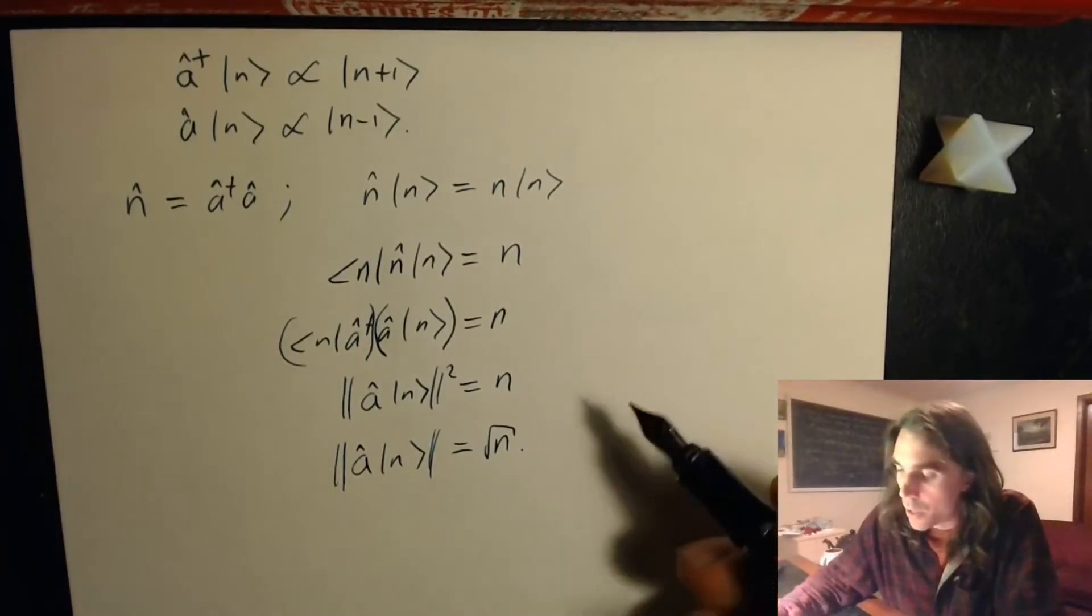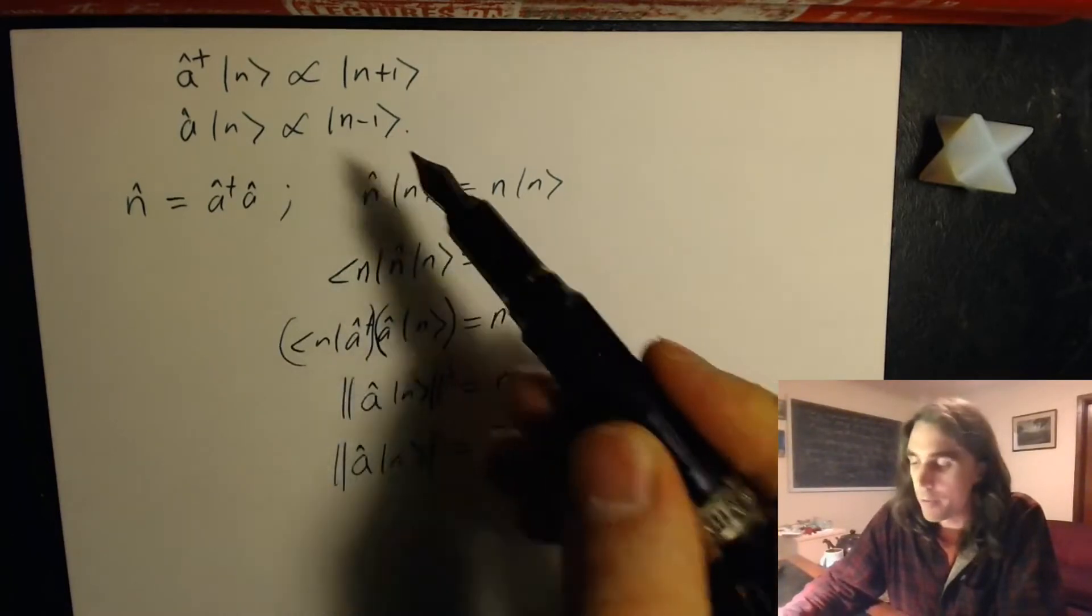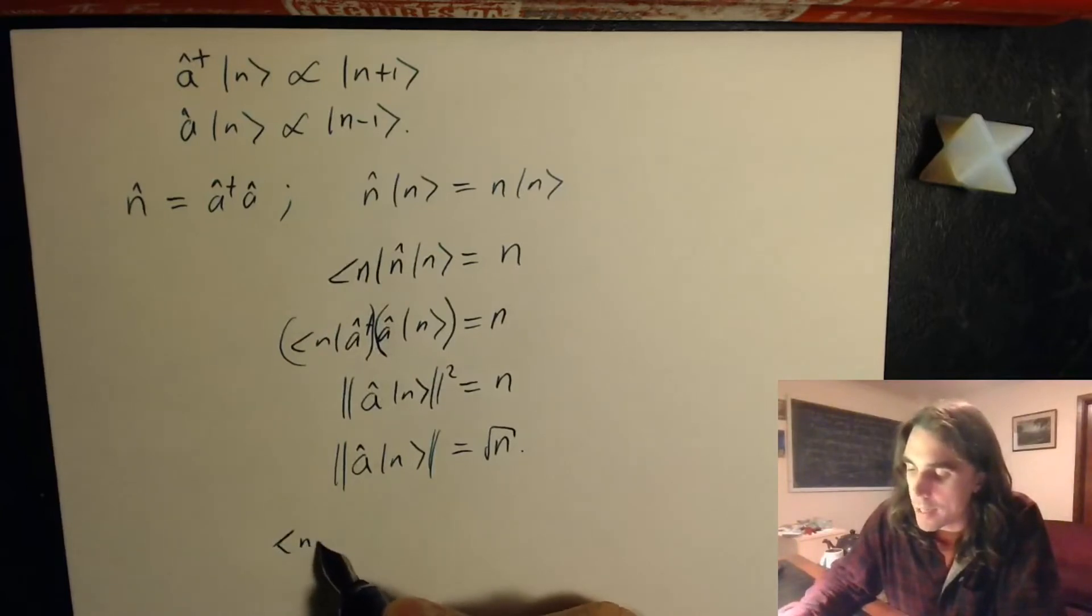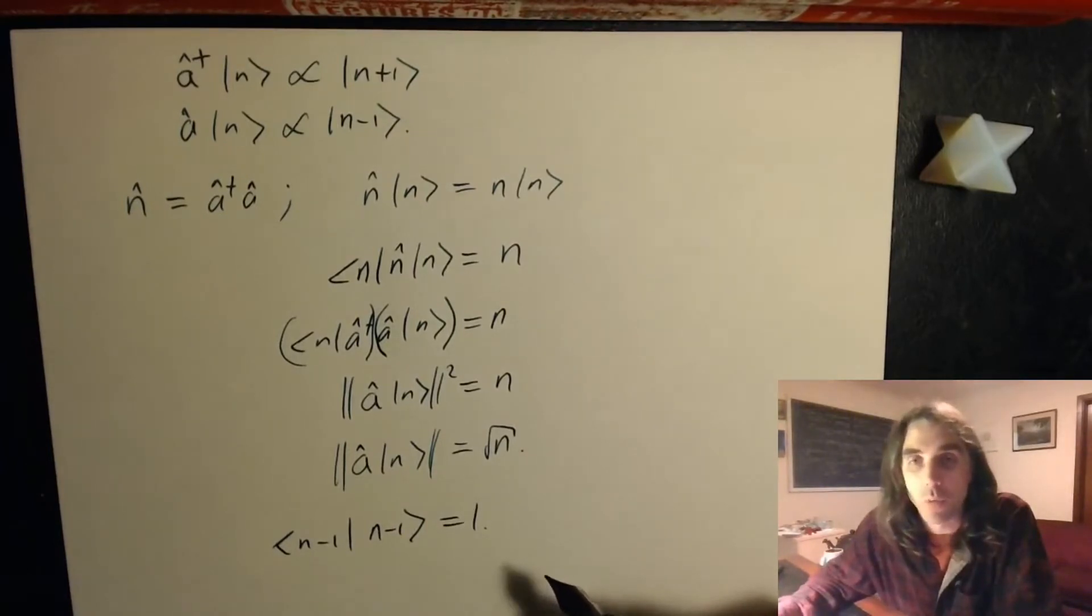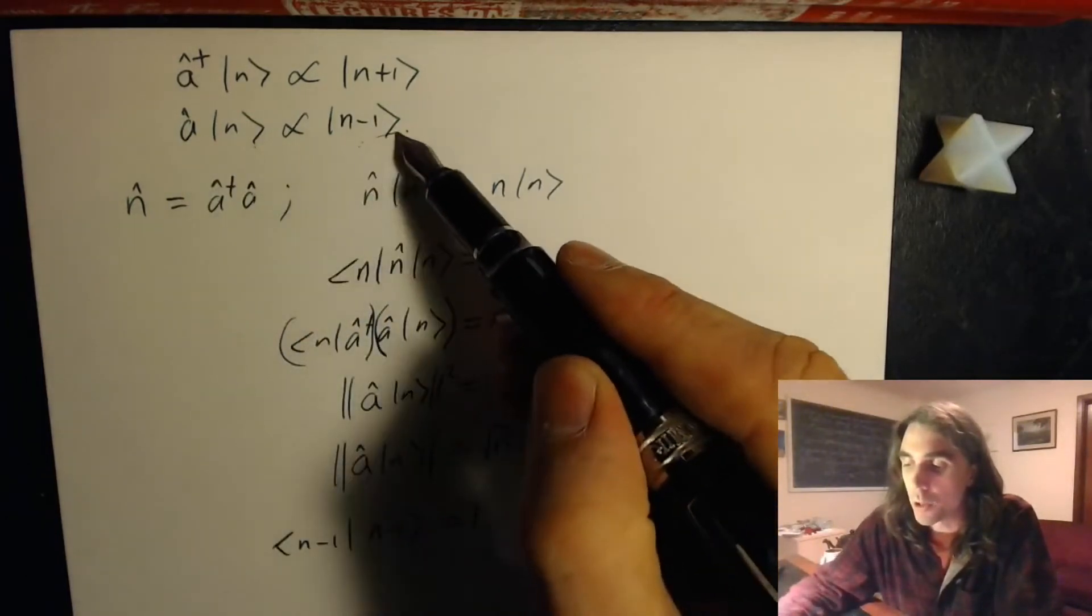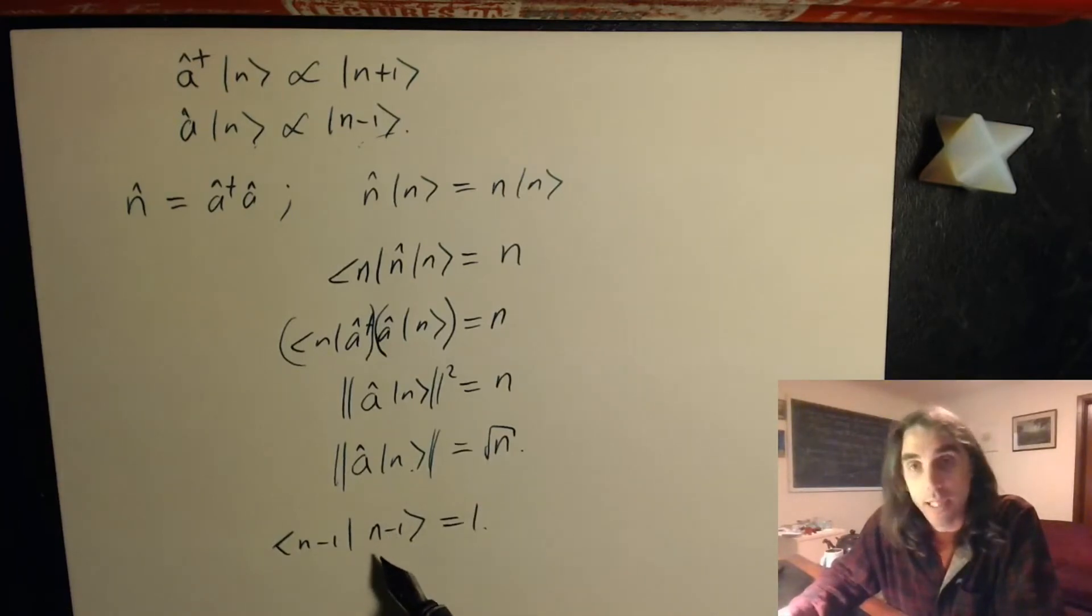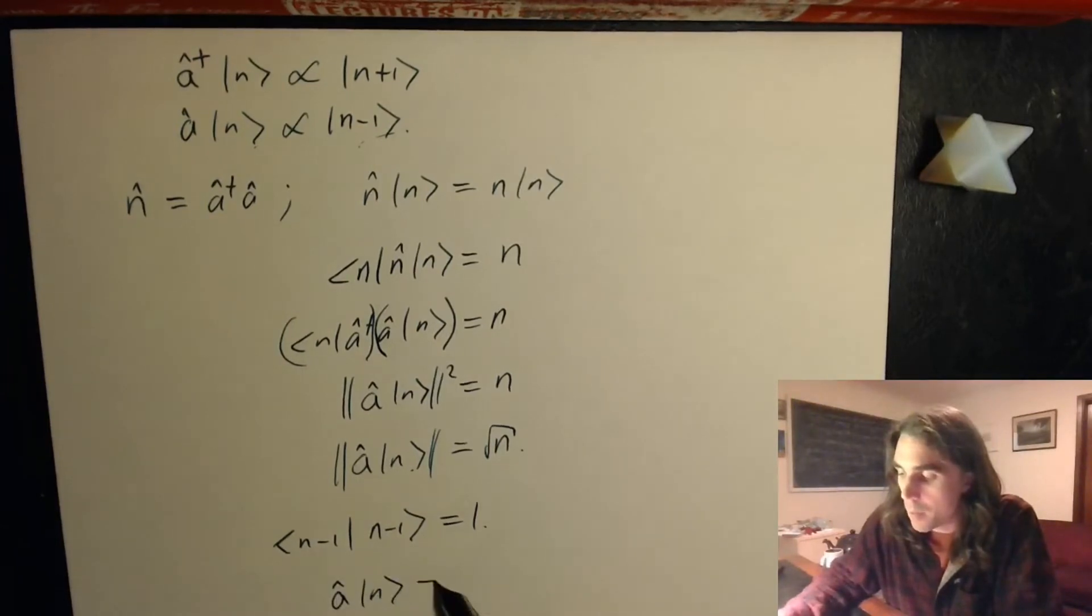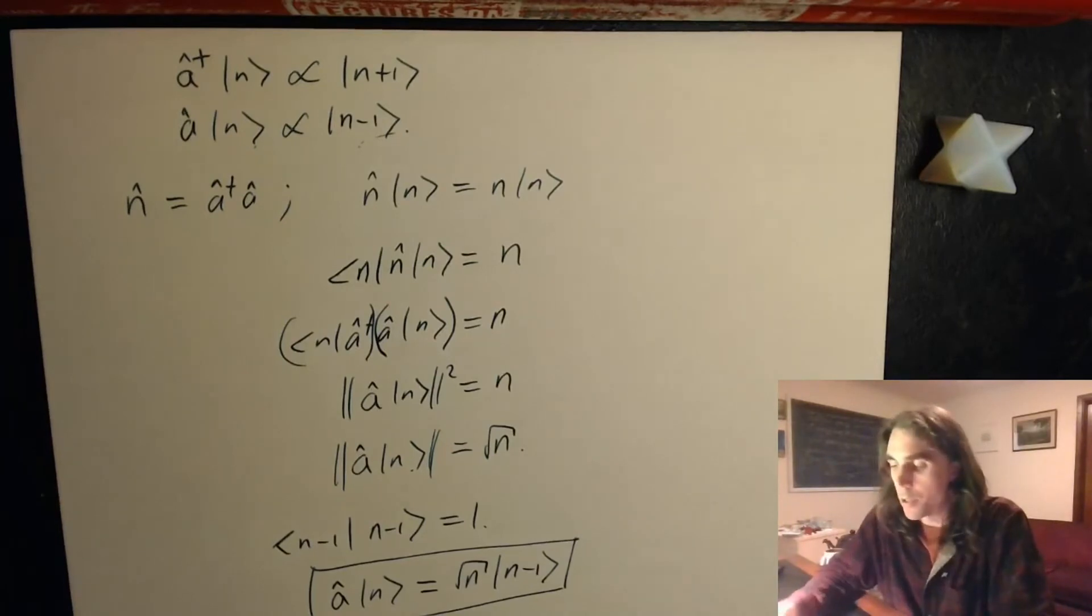So we have that a acting on n is proportional to n minus 1, so it's n minus 1 multiplied by some pre-factor. The length of state n minus 1 is equal to 1, because all states in the Hilbert space must be of length 1, that means they're normalized, physical states are normalized. And so if a acting on n is proportional to n minus 1, a acting on n is of length root n, and n minus 1 itself is of the length 1, then we put it all together and we see that a acting on n must equal the square root of n acting on n minus 1.